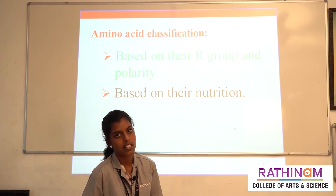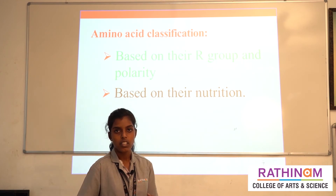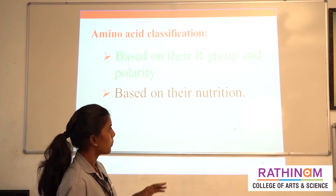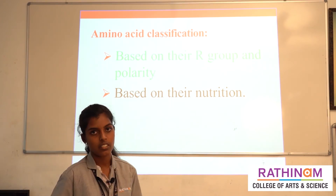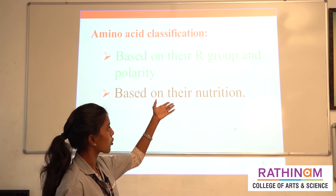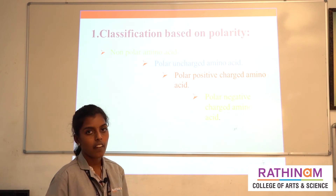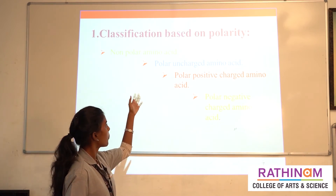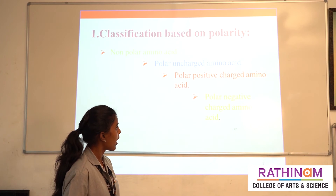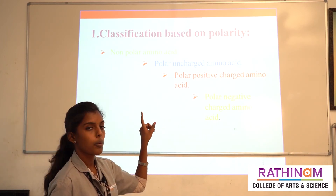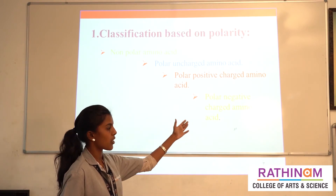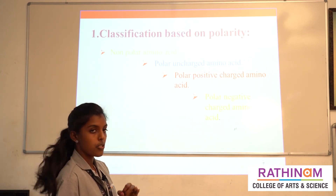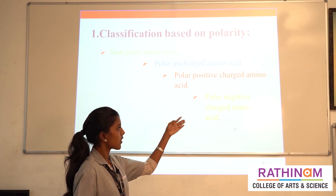Next is the classification of amino acids. Amino acids can be classified based on various categories; here we will focus on two: one is based on their R group (side chain group) and polarity, and another is based on their nutrition. Based on their R group and polarity, amino acids are classified into four groups: non-polar amino acids, polar uncharged amino acids, polar positive charged amino acids, and polar negative charged amino acids.